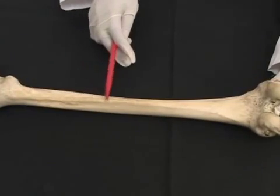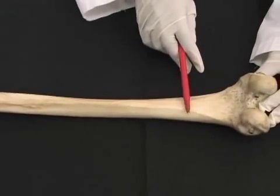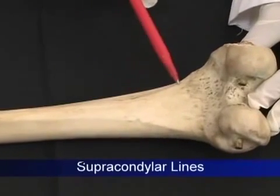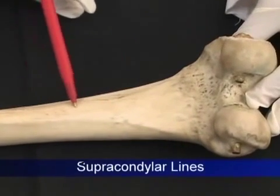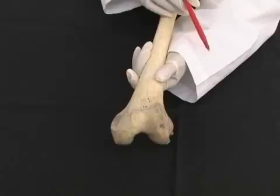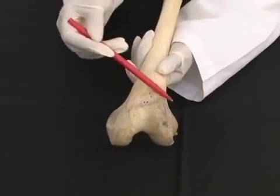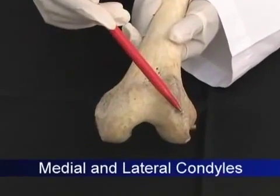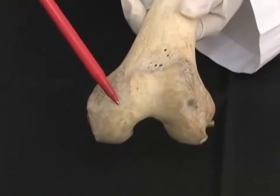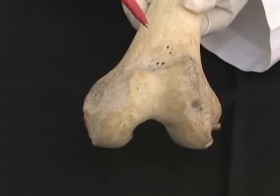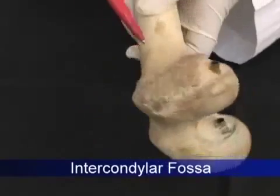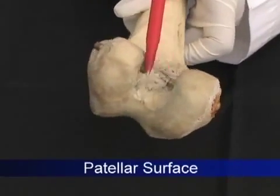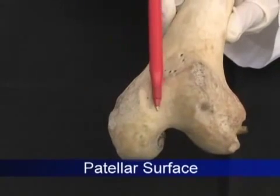This is the shaft — note its convex shape. On the posterior surface we see the linea aspera, where the thigh muscles attach. This is the popliteal surface, bordered by the supracondylar lines. This is the distal end; these are the medial and lateral condyles, which articulate with the tibia to form the knee joint. The intercondylar fossa lies posteriorly and the patellar surface lies anteriorly.